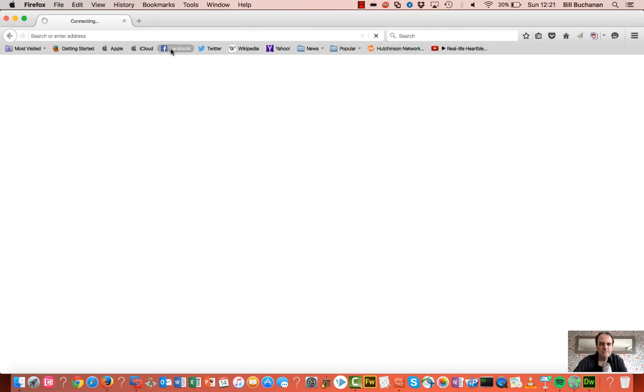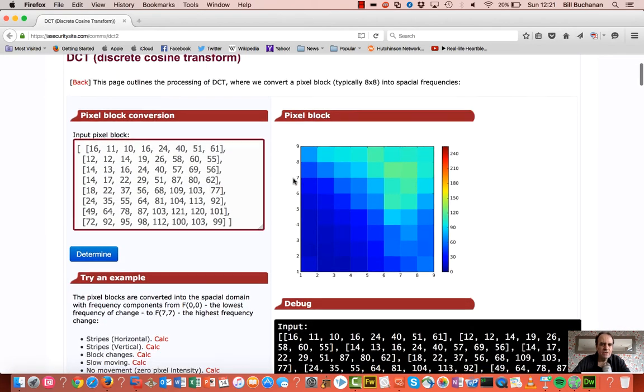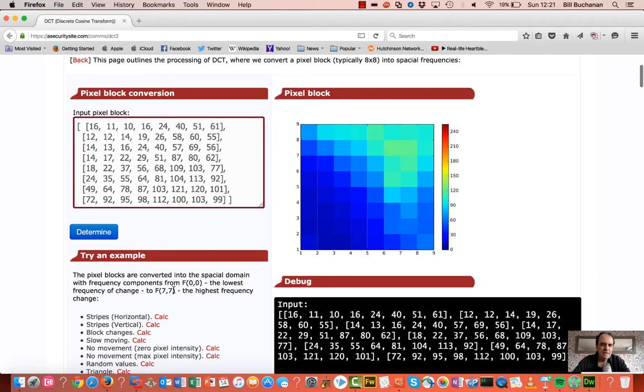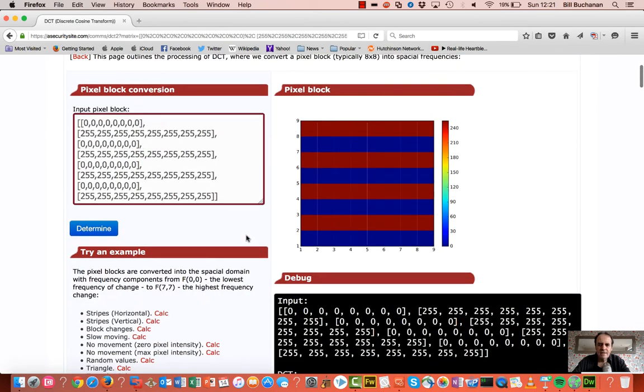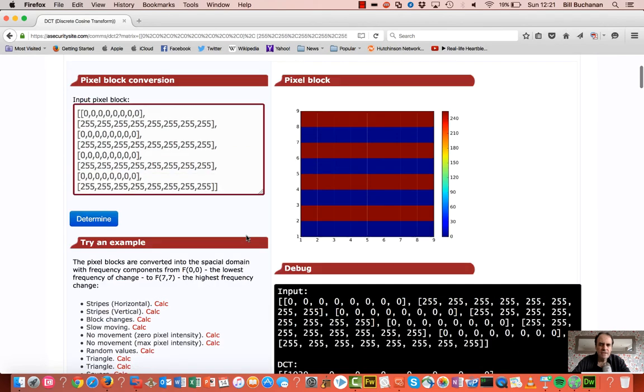If we have a look at the link here, this should show us a few examples. These are some example pixel blocks that we might have. On this page it will calculate the actual DCT for us.